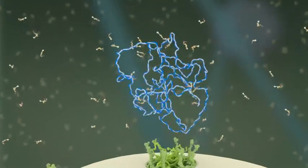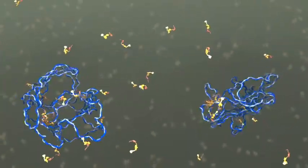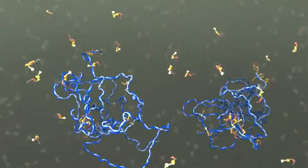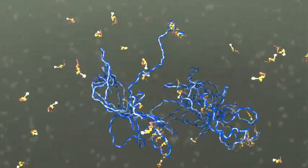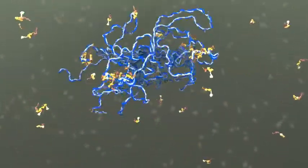Other viral RNAs are destined for packaging into new viruses. These RNAs attract GAG protein along their journey to the cell membrane. Along the way, two copies of viral RNA bind together, forming a stable, dimerized RNA structure.